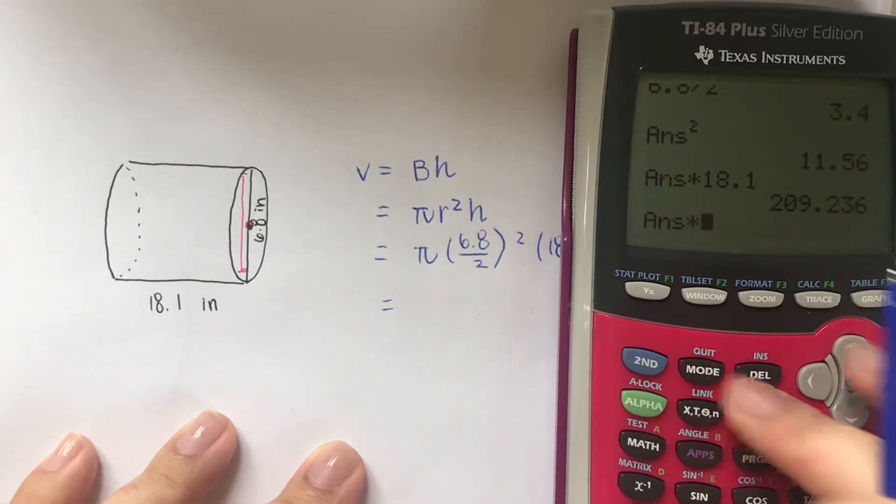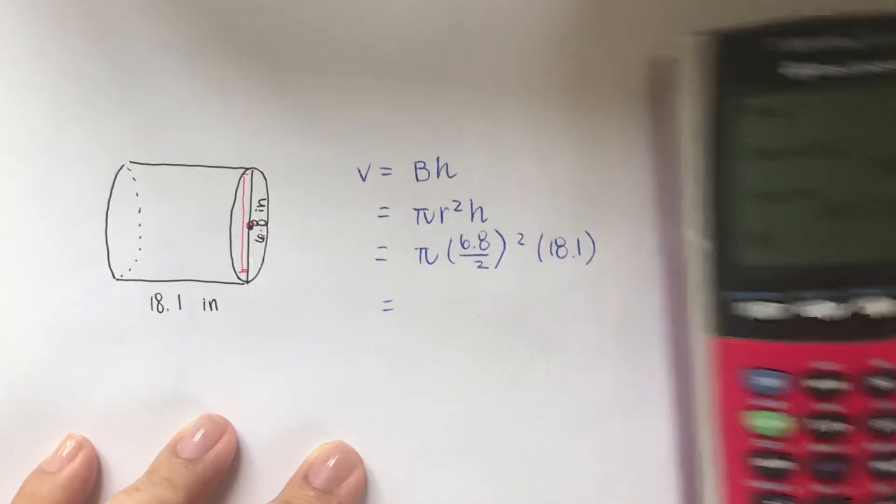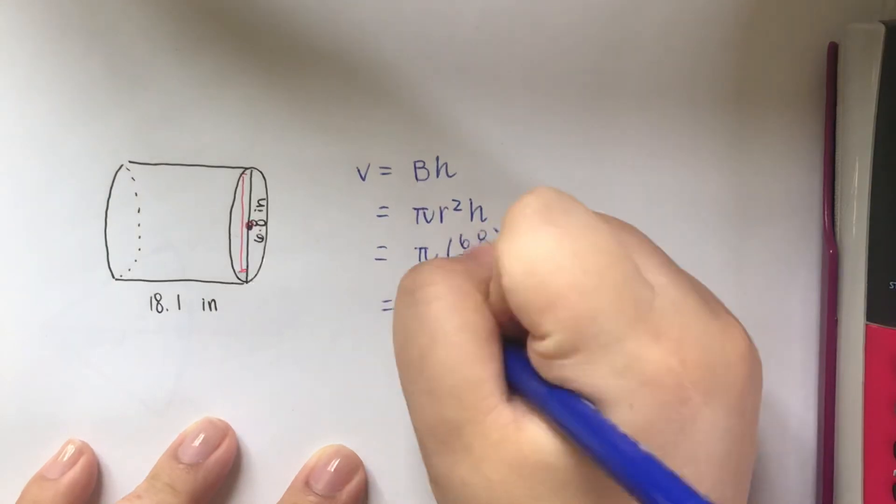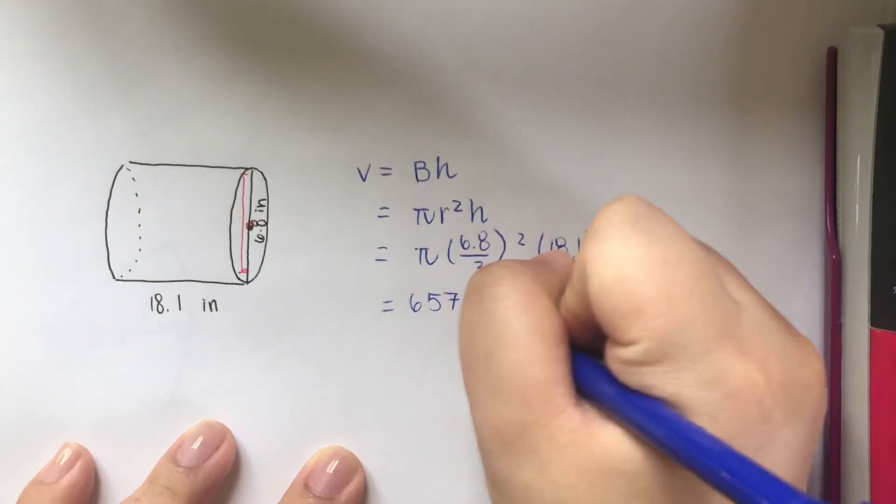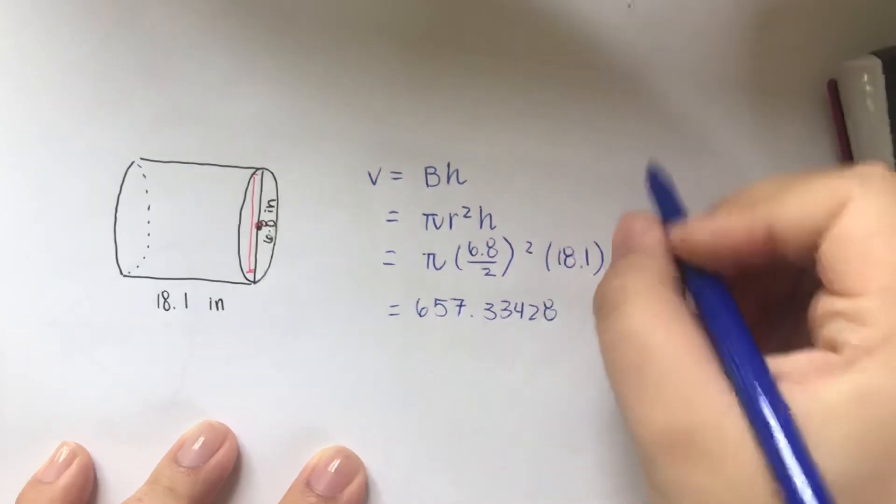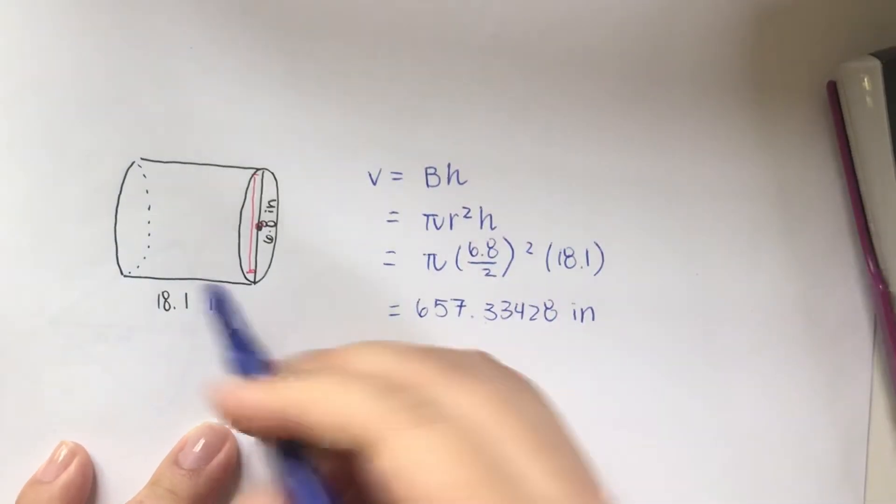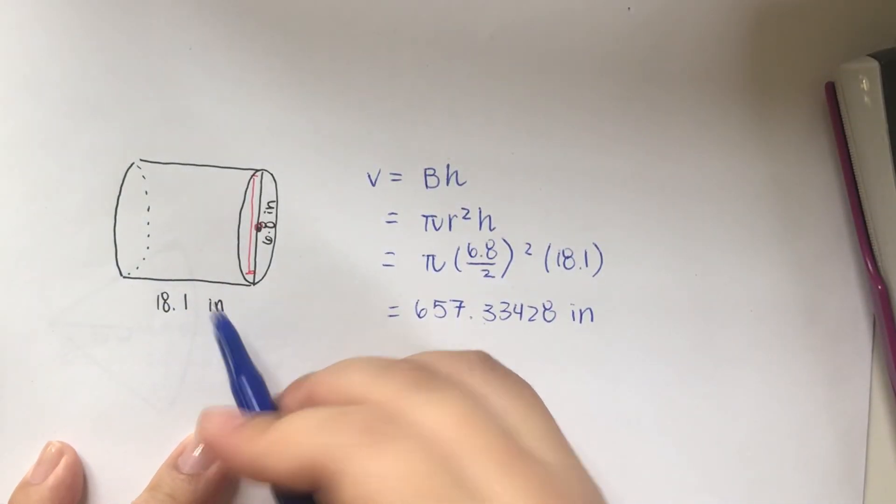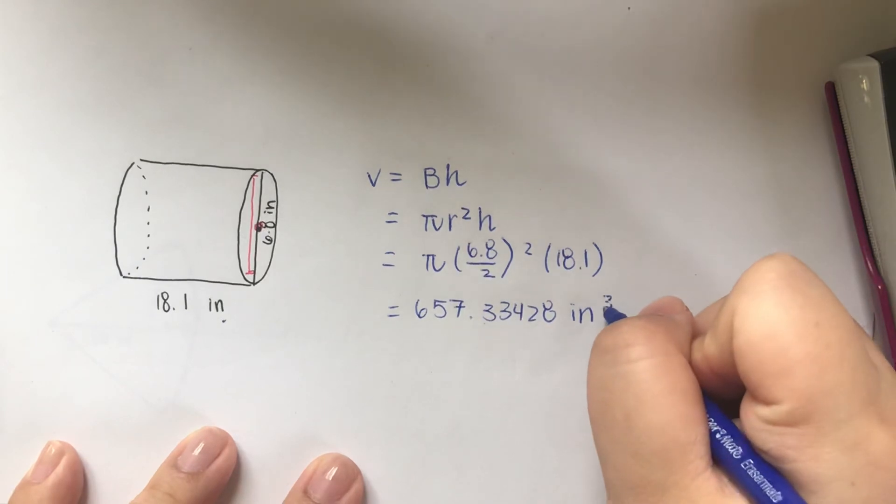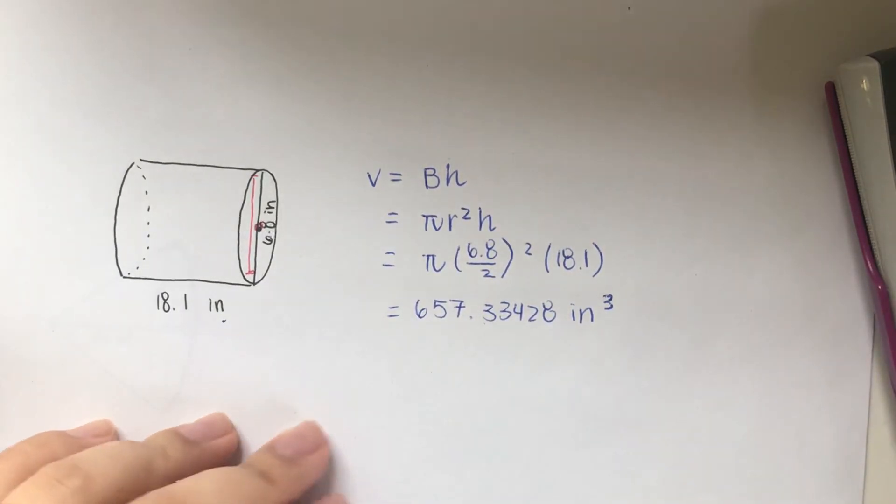So the answer multiplied by π, you should be able to get 657.33428 inches. Since we need to find the volume, it's cubic.